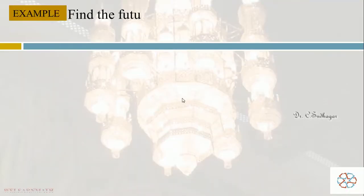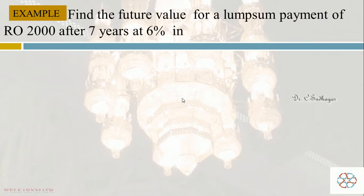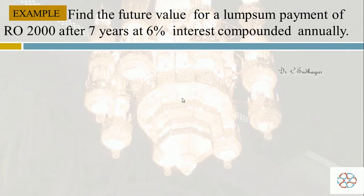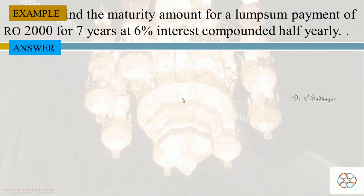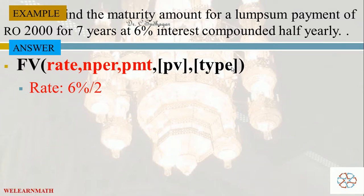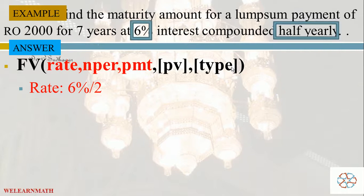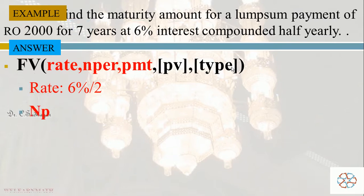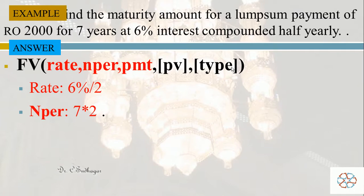Now let us take another example with a slight modification. Find the future value for a lump sum payment of 2000 Riyals after 7 years at 6% interest, but now compounded half-yearly (bi-annually). The data is the same but the rate becomes 6% divided by 2, since there are 2 compounding periods per year. The NPER becomes 7 multiplied by 2, which equals 14 payments. PMT is 0 for a lump sum, and the present value is minus 2000.